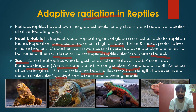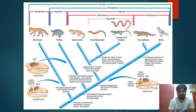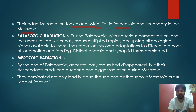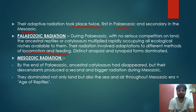Adaptive radiation in reptiles occurred in two phases: Paleozoic and Mesozoic. During the Paleozoic, with no serious competitors on land, the ancestral reptiles — the cotylosaurs — multiplied rapidly, occupying all ecological niches available. The radiation involved adaptation to different methods of locomotion and feeding. Distinct anapsid and synapsid forms dominated during this period.